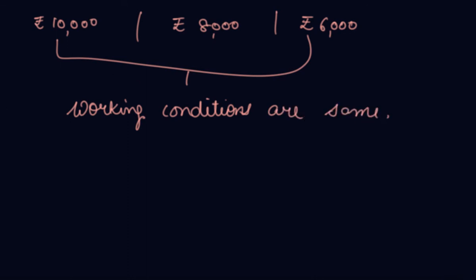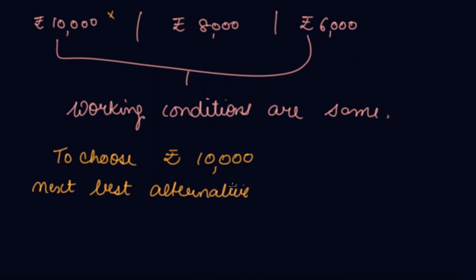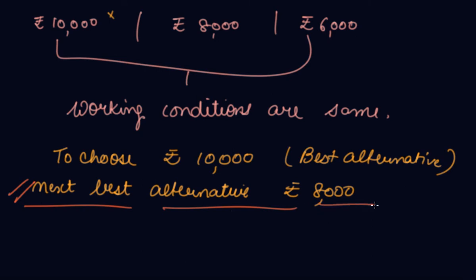What is the best alternative? Your best alternative is to choose rupees 10,000. If you do not choose rupees 10,000, what is your next best alternative? Your next best alternative is rupees 8,000. In order to choose the best alternative, that is rupees 10,000, you sacrifice your next best alternative. You are sacrificing your 8,000 rupees.